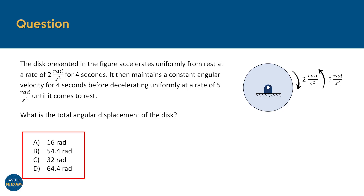In this question, we are presented with a disk pinned at its center. Initially, the disk accelerates from rest at a rate of two radians per second squared, and it does so for a time period of four seconds. After this, it maintains a constant angular velocity for an additional four seconds, after which it decelerates at a rate of five radians per second squared until it comes to rest. The task is calculating the total angular distance traveled by the disk.